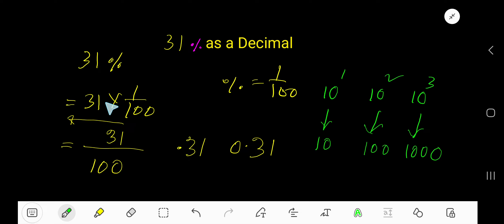Multiply the top numbers: 31 times 1 equals 31 divided by 100. Now divide 31 by 100.